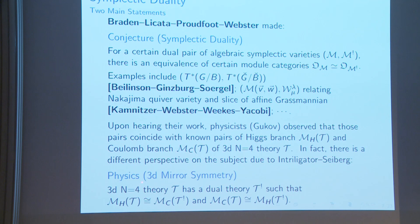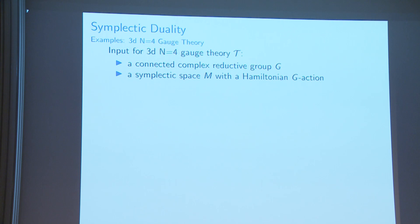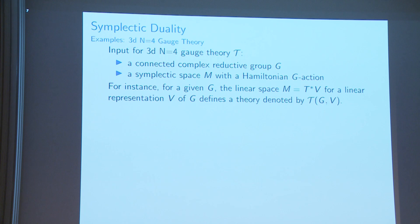There is another point of view: 3D mirror symmetry is a duality between two different 3D N=4 theories, where the Higgs branch and Coulomb branch are swapped. For 3D N=4 gauge theory, the input data is a group G and a symplectic space with a Hamiltonian G-action. For example, given group G and linear representation V, you can think of the cotangent bundle T*V, defining a theory T(G,V). The outputs are affine algebraic symplectic varieties: the Higgs branch and the Coulomb branch.